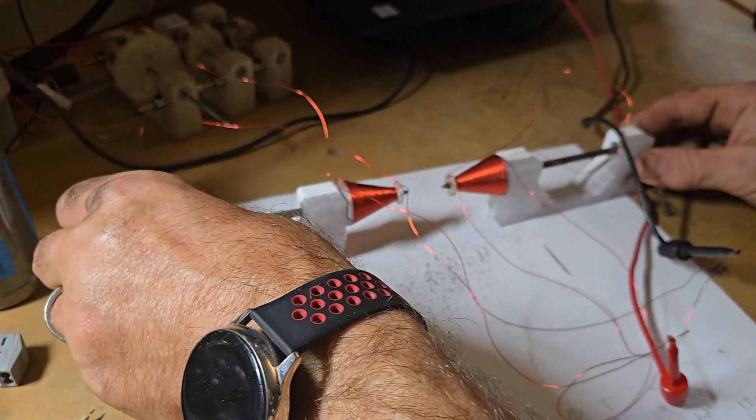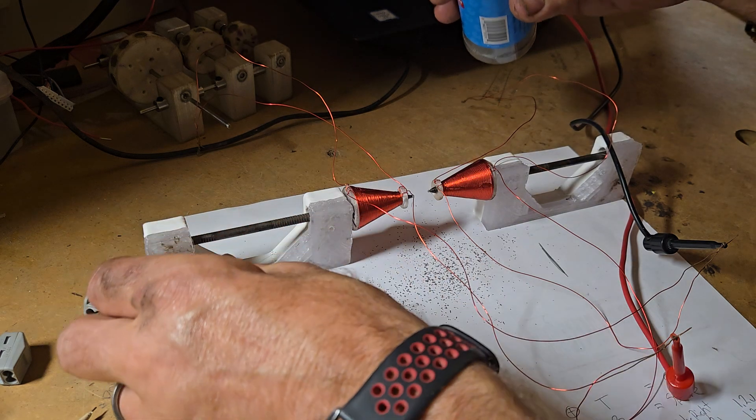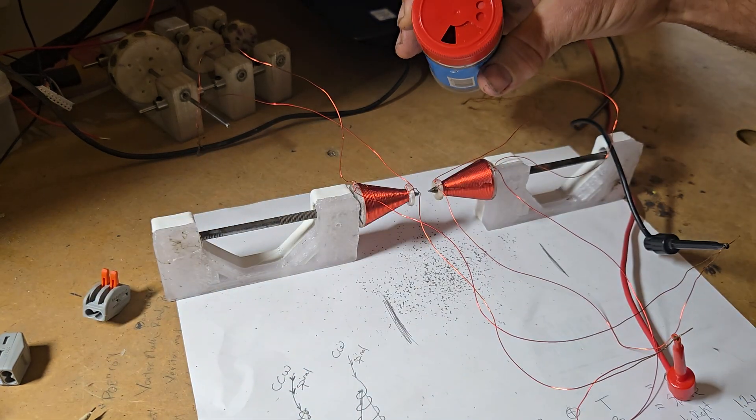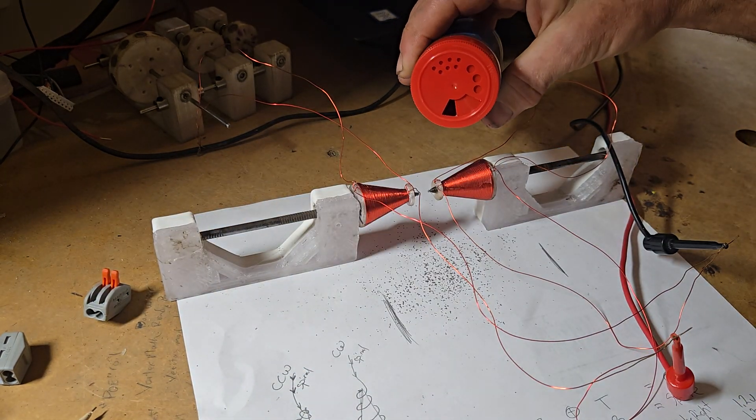So what you'll see here is we can bring these close together and we can pour a bunch of iron filings right here, and you'll see a sphere develop in between these two.